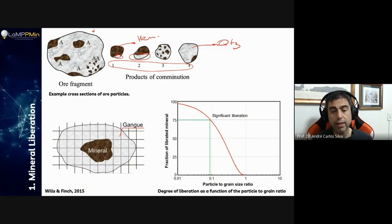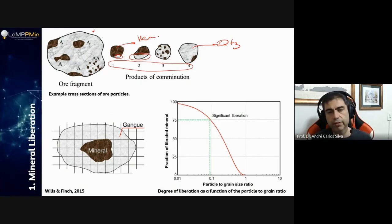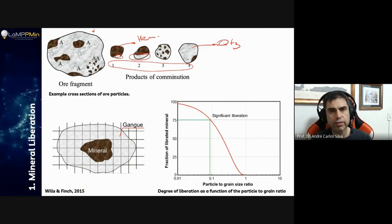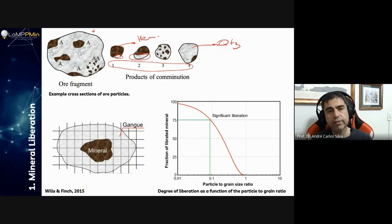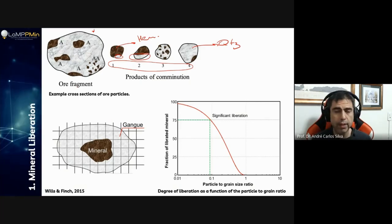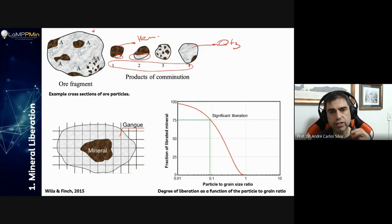Particle number two is almost 50-50, so we have a 50-50 chance of it ending up in our concentrate or with the quartz. Either I lose hematite or this material will dope my concentrate and lower my grade. Particle number three: I'm definitely going to lose this material. If I want to recover it, I have to break it even more — the size is not adequate yet. And particle number four is a nightmare — I have to keep grinding, or consider a chemical attack. Without attacking chemically, I won't be able to recover it — the liberation is just too small.